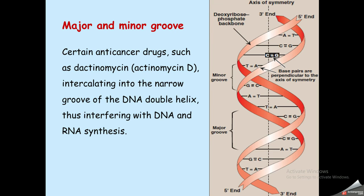For DNA replication and cell division, the two strands must be denatured. Dactinomycin D, as a chemotherapy drug, intercalates with the minor grooves and prevents denaturation of the DNA, thereby inhibiting replication and cell division. This is the mechanism by which it acts as an anti-cancer drug.